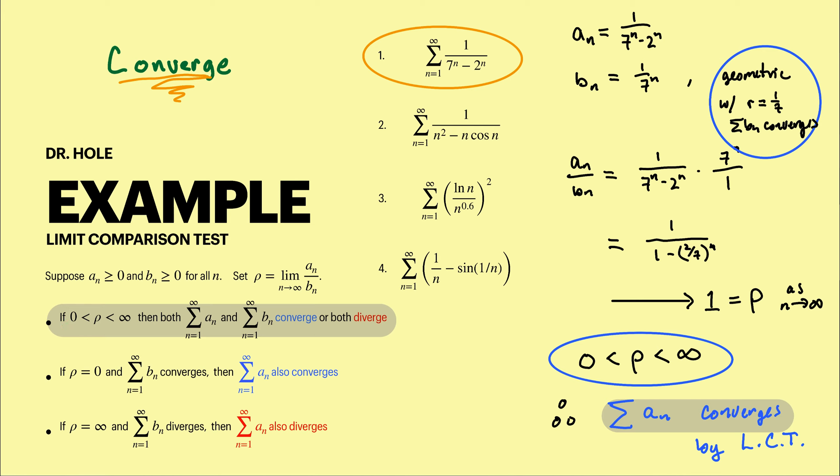Therefore the limit of a_n over b_n is rho equal one. Rho equaling one is a positive finite quantity where the sum of the b_n's converges, therefore sum of the a_n's will also converge thanks to LCT.